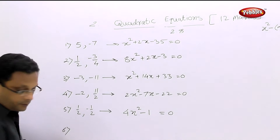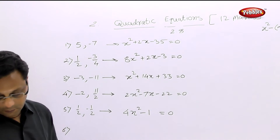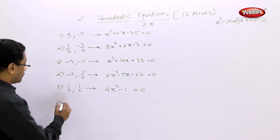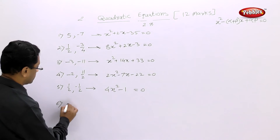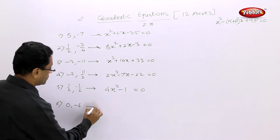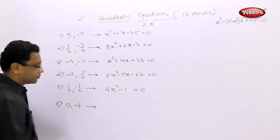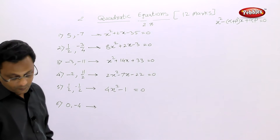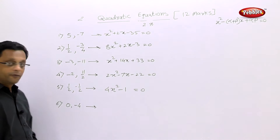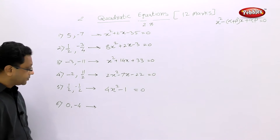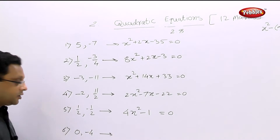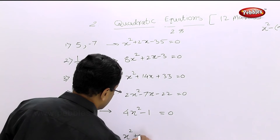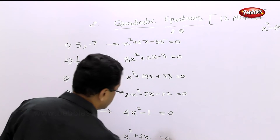Sixth example: roots are 0 and minus 4. Pause your video and do it. The answer is x squared plus 4x equal to 0.